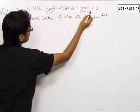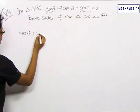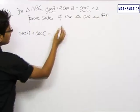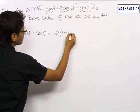Clubbing the cos A and cos C terms together and taking 2 cos B to the right-hand side, we get cos A + cos C = 2(1 - cos B).